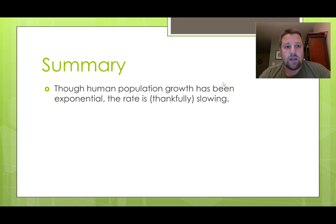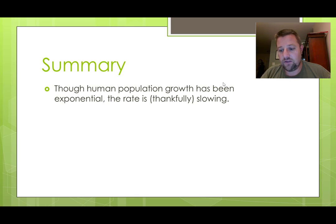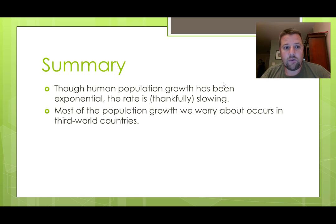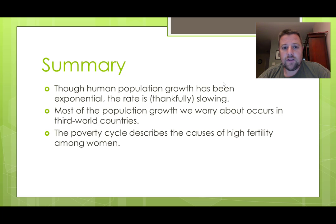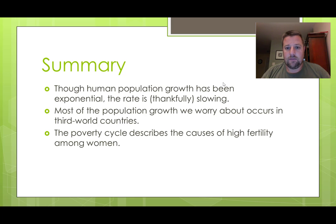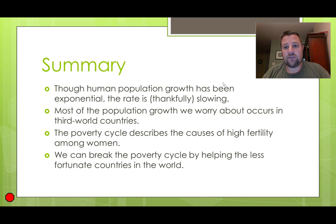As a summary: we looked at how population growth has been exponential but is currently slowing down. We know that most of the population growth has been occurring in third world countries. We ended with the poverty cycle, which describes the causes of high fertility among women, and we also went over ways that we can break that cycle.